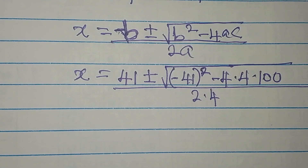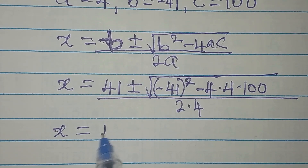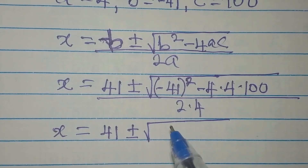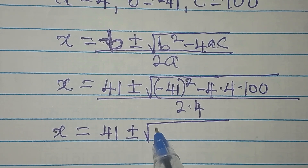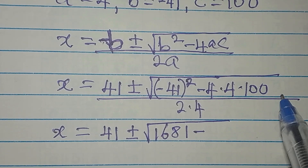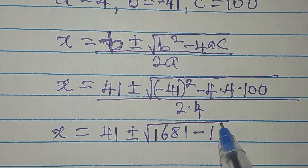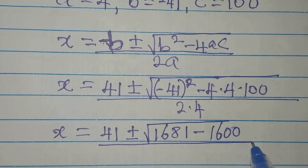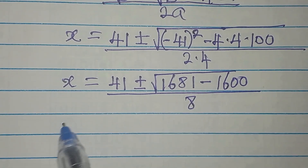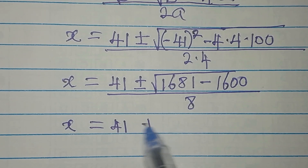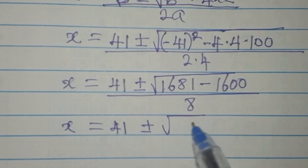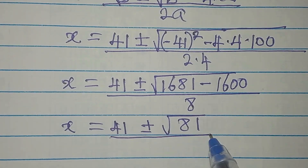So we have x equals 41 plus or minus the square root of: (minus 41) squared is 1681, minus 4 times 4 is 16, and 16 times 100 is 1600. The whole expression is divided by 8 (which is 2 times 4). So x equals 41 plus or minus the square root of 1681 minus 1600, which is 81, all over 8.